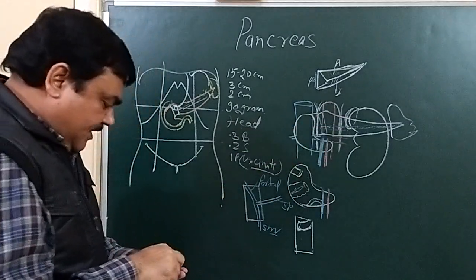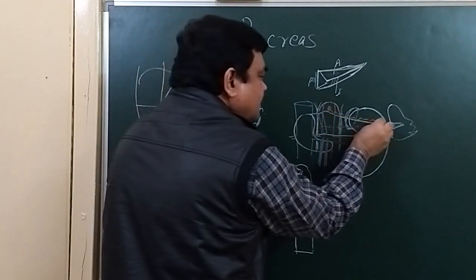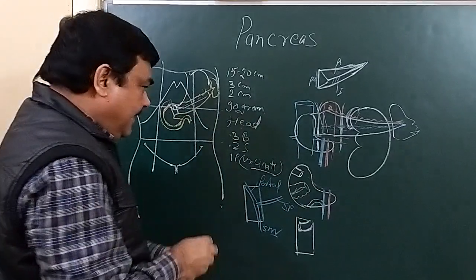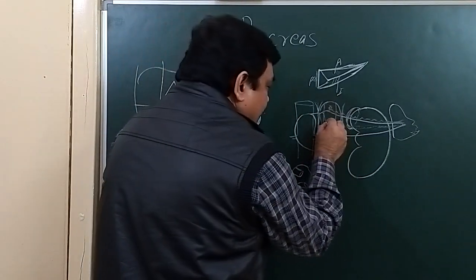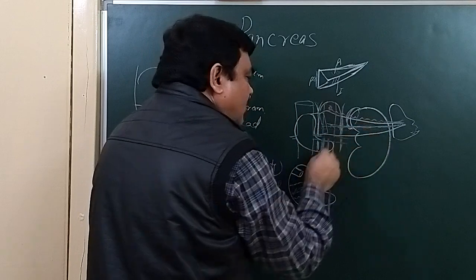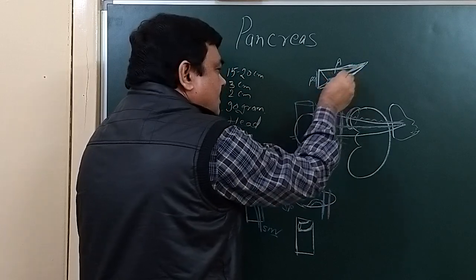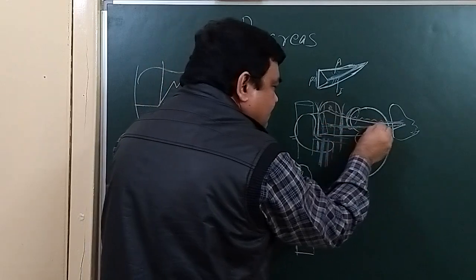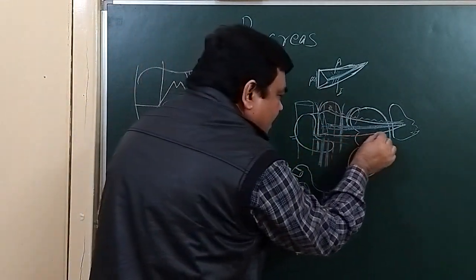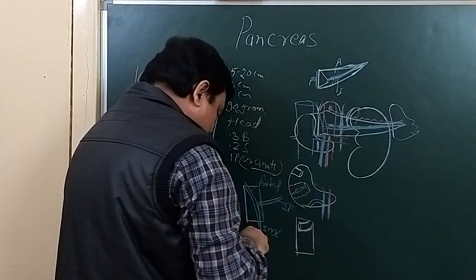The superior border is related with the celiac trunk and the splenic artery. Along the anterior border, the root of the transverse mesocolon is attached. The inferior border is related with the superior mesenteric artery and superior mesenteric vein.